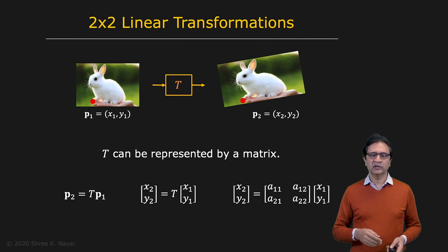So first, let's start with the simple class of two by two linear transformations. So here you have an image. That's your input image. And you have a point in the image P1, which is given by X1, Y1. After you apply a transformation, you end up with this image where P1 goes to P2, which has location X2, Y2.